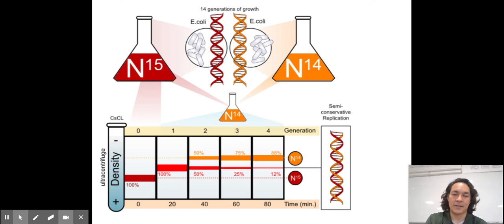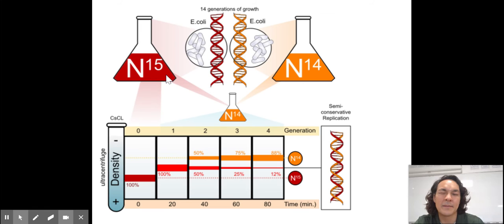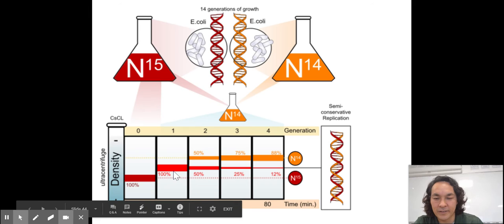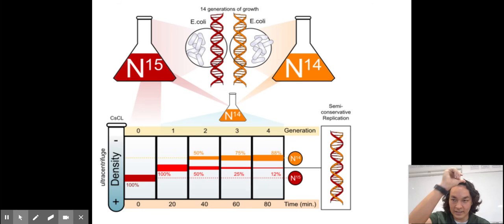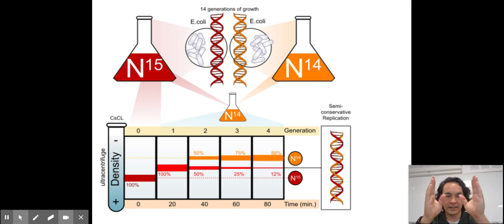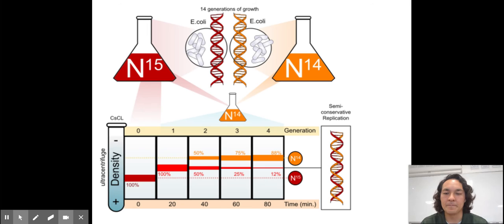The Meselson-Stahl experiment grew E. coli in a heavy nitrogen isotope — nitrogen is in the bases of DNA. After one generation of growing in the lighter N-14 isotope, they saw that all DNA came out at an intermediate density. After a second generation, half came out at N-14 and half at the intermediate density. This confirms semi-conservative replication: one old strand serves as a template, producing one new strand — resulting in each daughter cell having one old and one new strand.